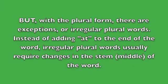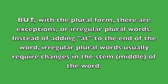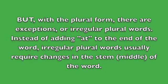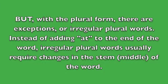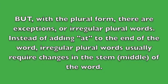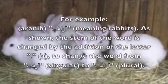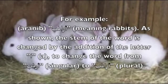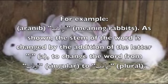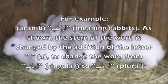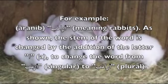But with the plural form, there are exceptions or irregular plural words. Instead of adding 'at' to the end of the word, irregular plural words usually require changes in the stem or the middle of the word. For example, 'araneb,' meaning rabbits. As shown, the stem of the word is changed by the addition of the letter 'a' to change the word from 'arnab,' singular, to 'araneb,' plural.